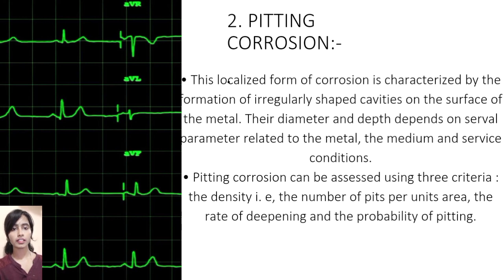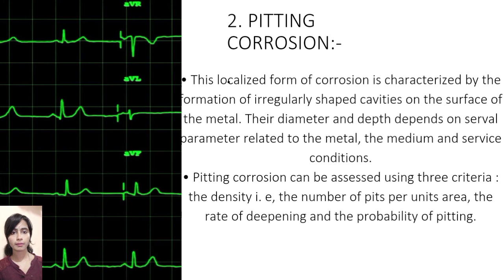Pitting corrosion. This localized form of corrosion is characterized by the formation of irregularly shaped cavities on the surface of the metal. The diameter and depth depend on several parameters related to the metal, the medium, and the surface condition. Pitting corrosion can be assessed using three criteria: the density (number of pits per unit area), the rate of deepening, and the probability of pitting.